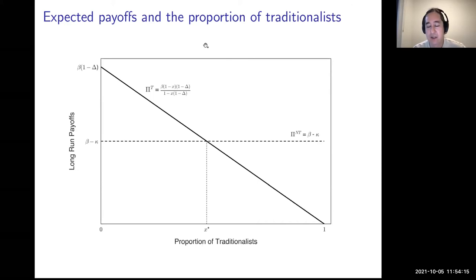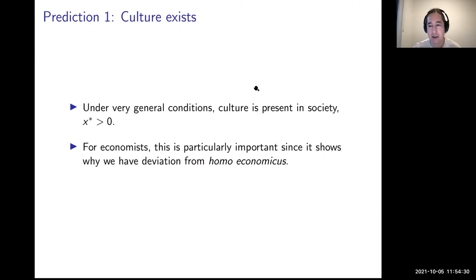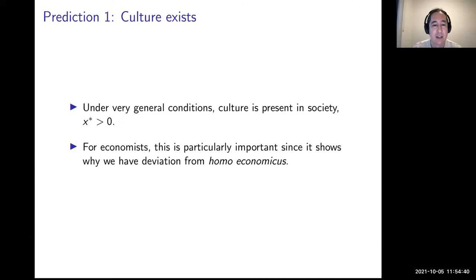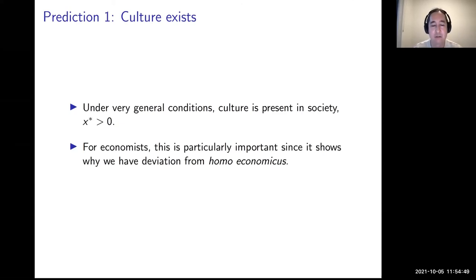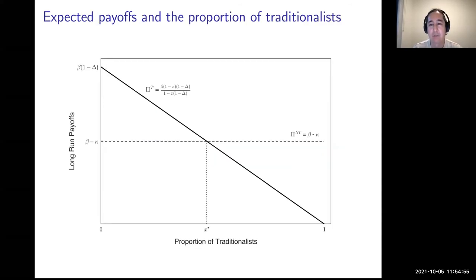Under very general conditions — and this is a super important lesson for economists — there is some equilibrium amount of cultural learning, some proportion of traditionalists in the economy, so that not everyone is rational or homo economicus. This dovetails nicely with behavioral economics and cross-cultural experiments. Joe Henrich has done a lot of work on cross-cultural comparisons. The key point: in equilibrium, under very general conditions, you get some reliance on culture.